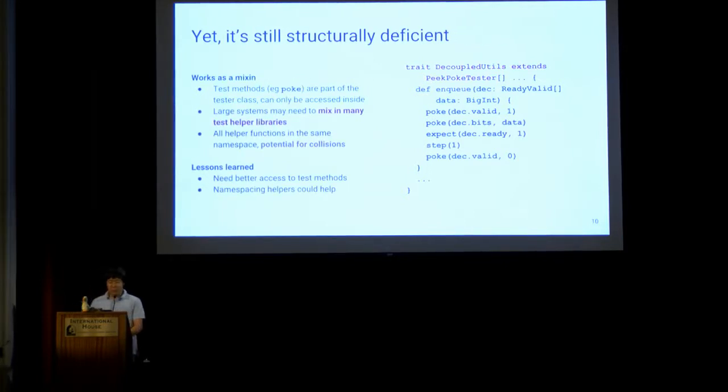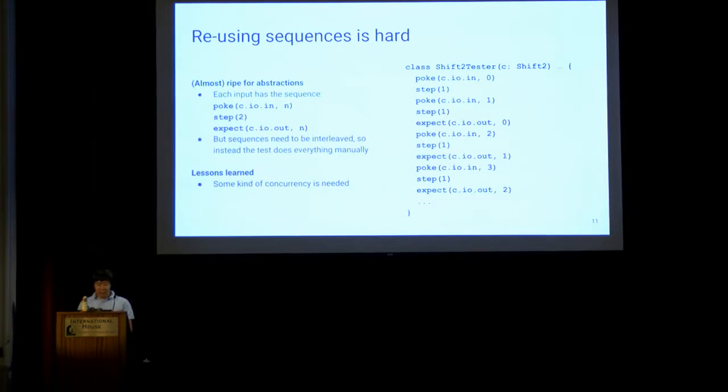But there are two big problems with the implementation. First, test methods like poke can only be accessed inside the tester class. So the final top-level test needs to extend every utility library it tends to use, which basically means hello boilerplate. Second, all the test helper methods are in the same namespace, leading to potential for collisions. In this example, enqueue in particular is something that's pretty generic, and depending on your application could have different meanings.